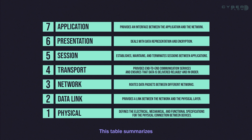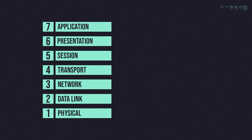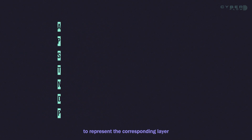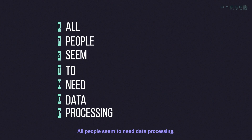This table summarizes the layers of the OSI model and provides a brief functional description. Memorizing the name and order of the layers in the OSI model can be difficult, but a mnemonic phrase can be helpful. The following mnemonic uses the first letter of each word to represent the corresponding layer, with A standing for the application layer: All people seem to need data processing.